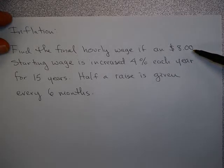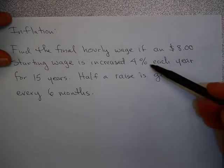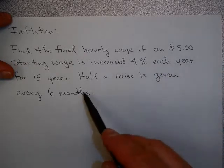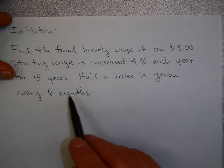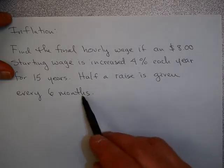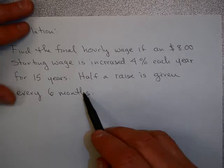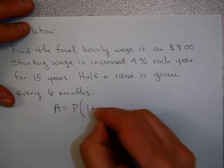So let's suppose you find the final hourly wage if an $8 starting wage is increased 4% each year for 15 years. But then suppose this company says half a raise is given every 6 months. This is not compounded annually. This is interest compounded semi-annually or two times a year. So I'm going to use this formula now.